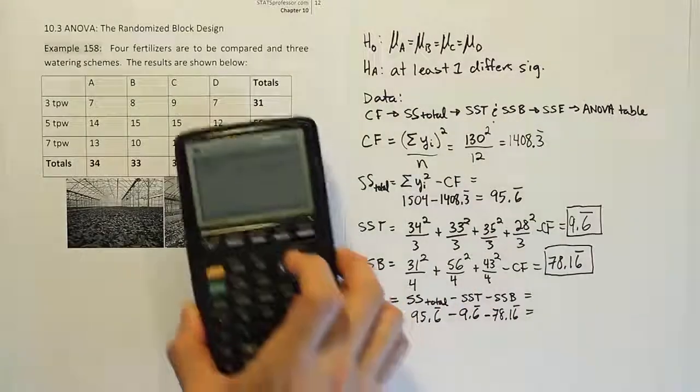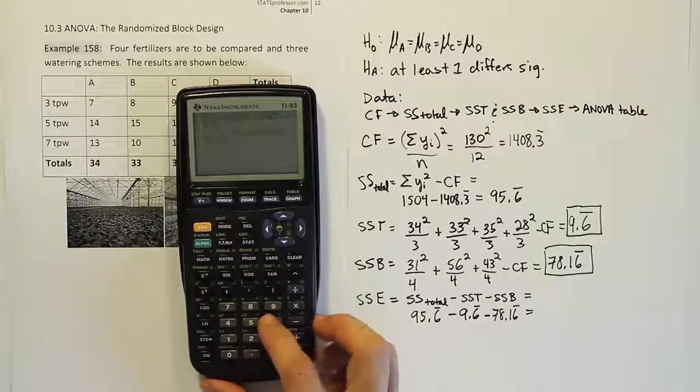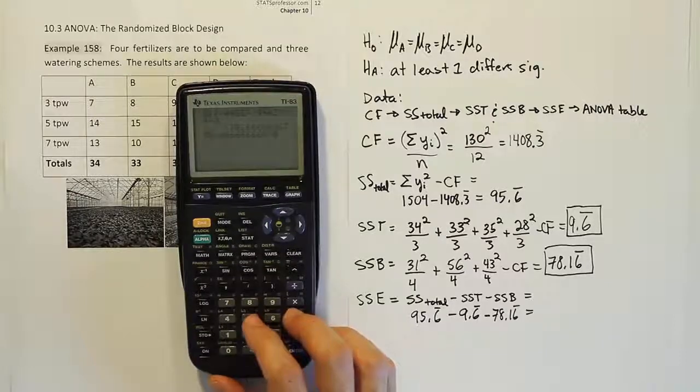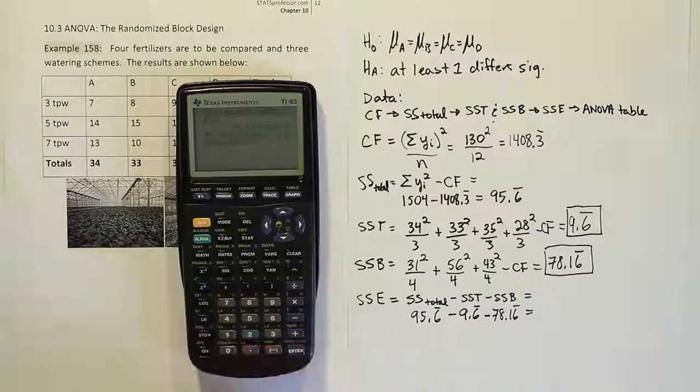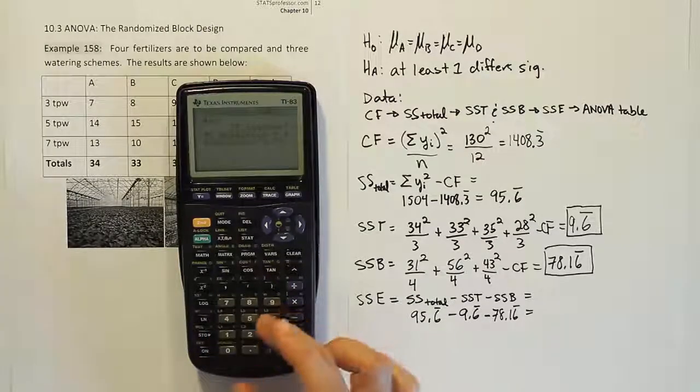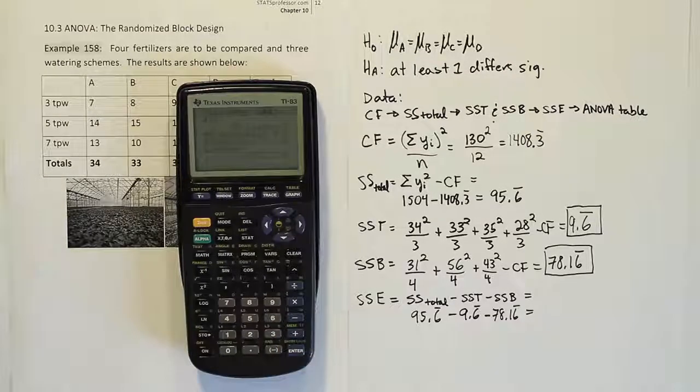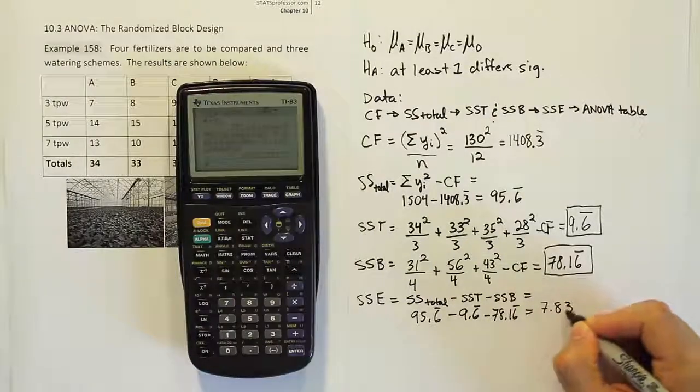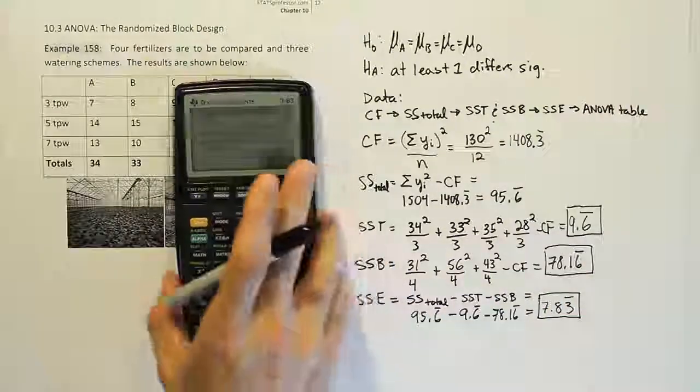Alright. Let's see what that gives us ultimately for the value we're looking for. So we have 95 point, I'm going to do 6666666. Just keep typing it in. Just give a few decimal places there. And then minus 9 point, and then again, I'm going to write a bunch of sixes because 9.6 repeating. Minus 78.1. And then again, a bunch of decimal places repeated. And if I do that, I get 7.83 repeated. So 7.83 repeated. So that is your sum of squares for error.